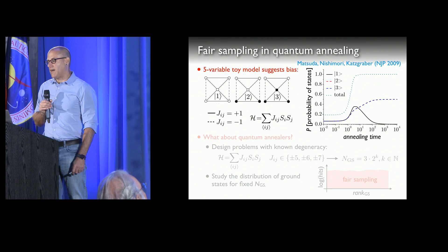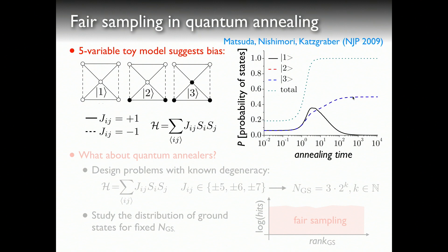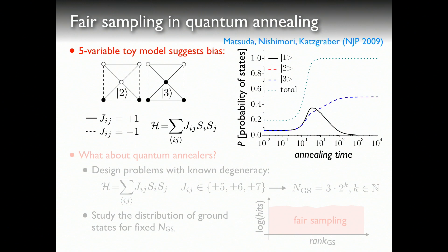As Mario mentioned, we started looking at this back in 2009 with Yoshiki Masuda and his Mori sensei, where we looked at a very simple five-spin model — white is spin up, black is spin down — with ferromagnetic and antiferromagnetic lines. You can figure out that there are three ground states up to spin reversal symmetry. If you integrate the simple Schrödinger equation, what you find is that states two and three appear 50 percent of the time, but state one is actually exponentially suppressed.